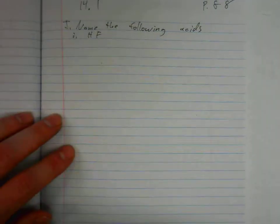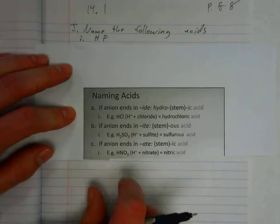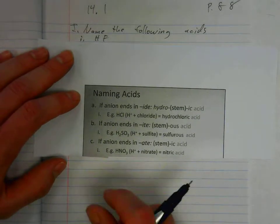Naming acids is something that involves following rules. We have three basic situations for naming acids.